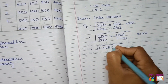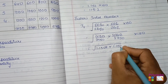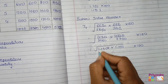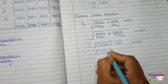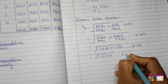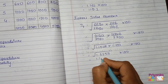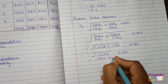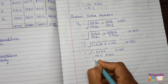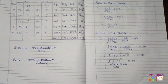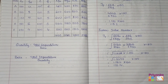For Fisher's index number: √(p1q0/p0q0 × p1q1/p0q1) × 100 = √(1.152 × 1.152) × 100 = √1.3257 × 100 = 1.1514 × 100. After removing the root, the final answer is obtained. Don't forget to practice illustrations 13, 14, 15, and 16.